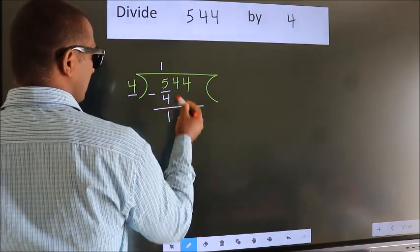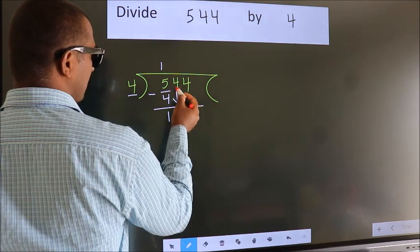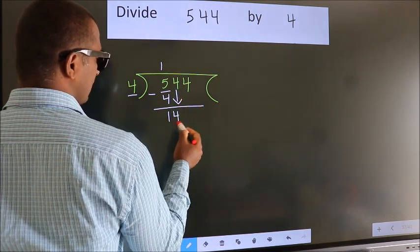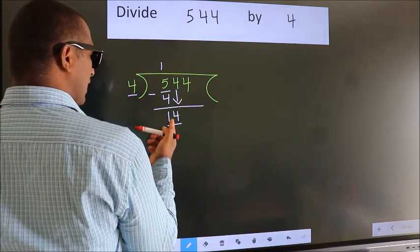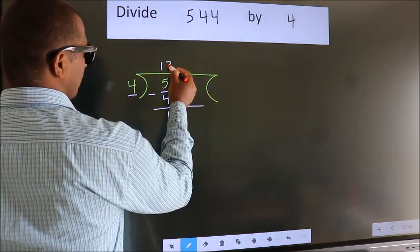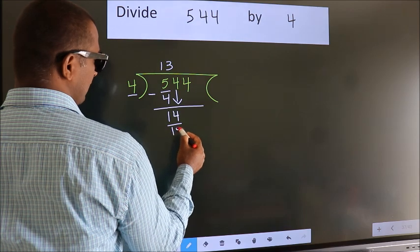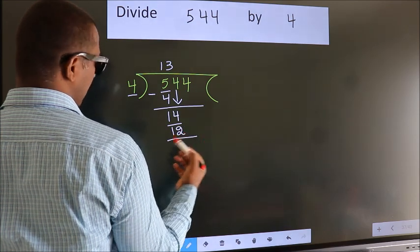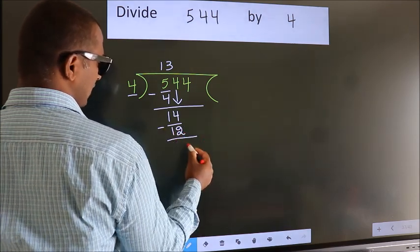After this, bring down the beside number. So, 4 down. So, 14. A number close to 14 in 4 table is 4 3s 12. Now, we subtract. We get 2.